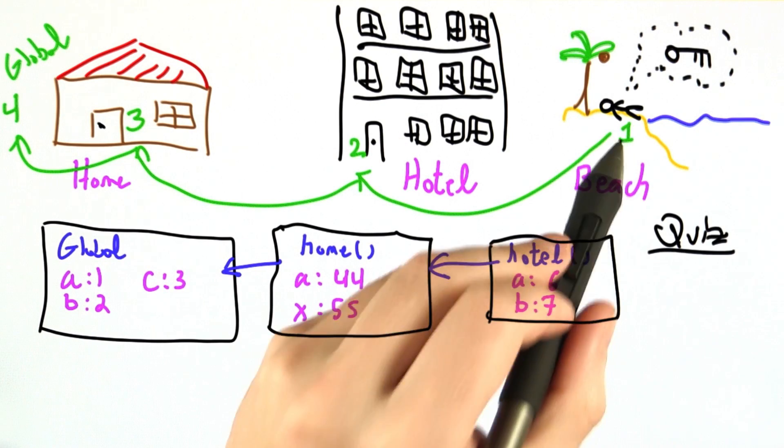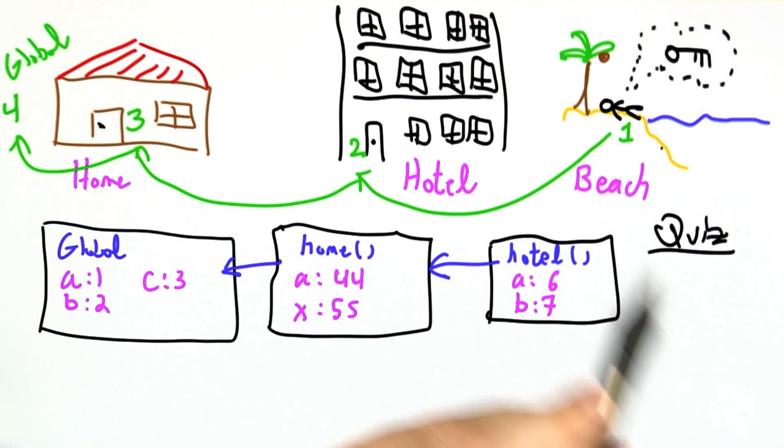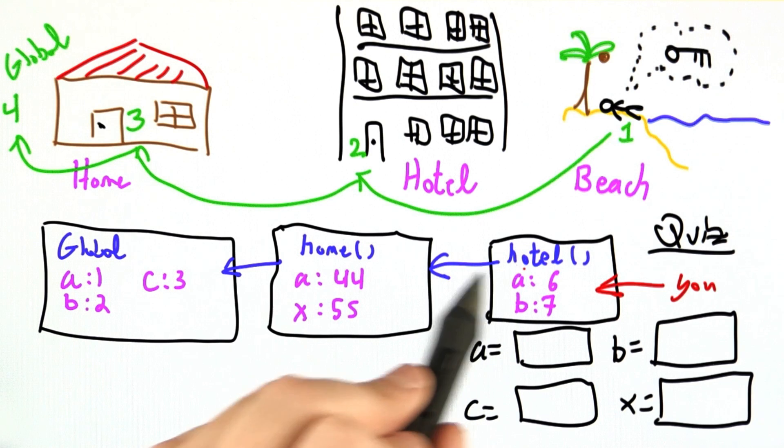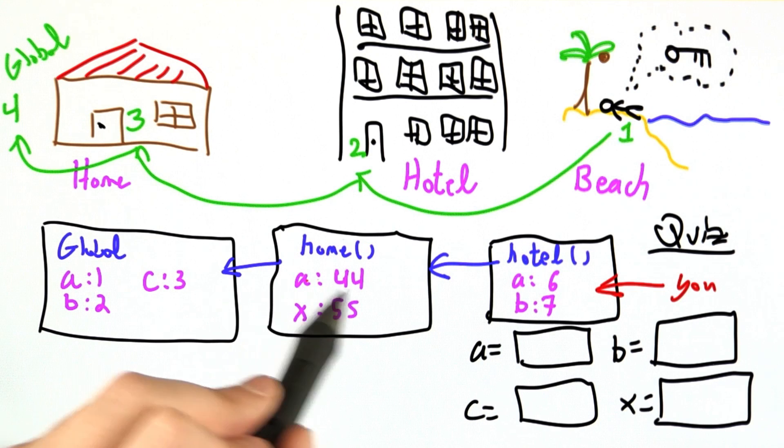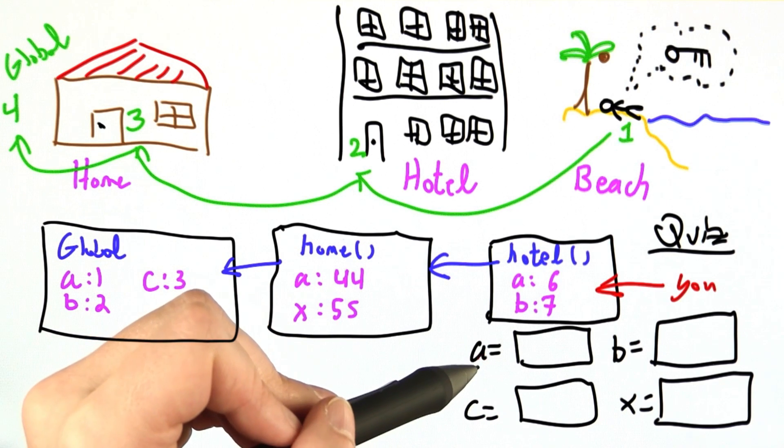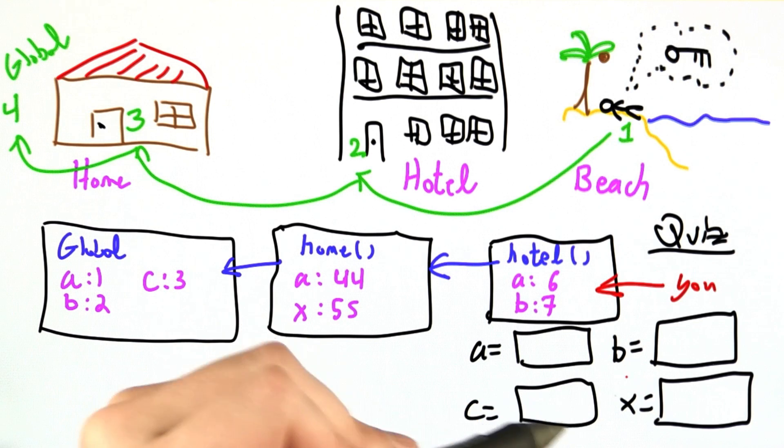So let's test our knowledge of this idyllic tropic scene with a quiz. Suppose you are currently in the hotel environment. We have A is 6 and B is 7. That points back to the home environment where A is 44 and X is 55, and that points all the way to the global environment where A is 1, B is 2, and C is 3. You're in the hotel and you want to evaluate A, B, C, and X. What are the values of these variables? Fill in the blanks.